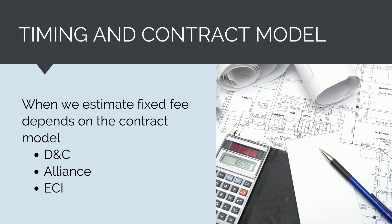When we estimate this fixed fee will depend on the contract model used by the client. On a typical design and construct contract, we'll estimate this fixed fee during the tender stage. On an alliance contract, we'll work with the client to determine this fixed fee after contract award. And on an early contractor involvement contract, we'll do this after we've already worked with the client for an extended period of time. Basically, in all these situations we'll still eventually estimate a fixed fee — the contract model will determine when.